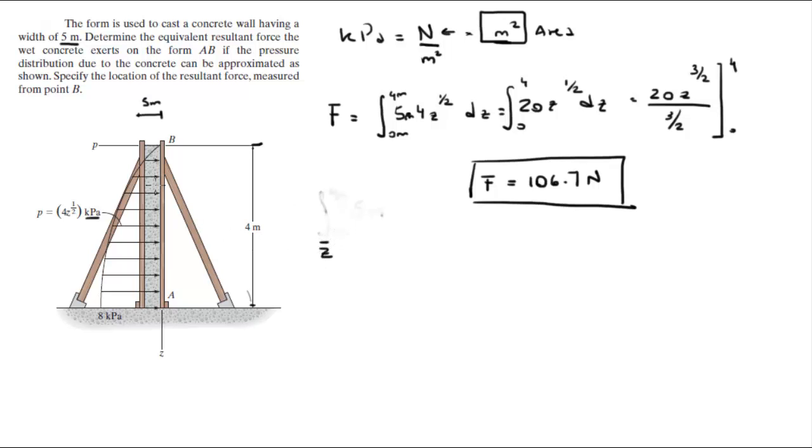Now c bar is the distance from here to a random place here, this is c bar where the equivalent force which is this force will be applied if you were to replace the system.